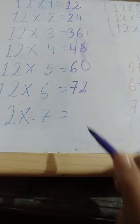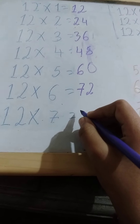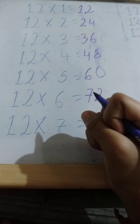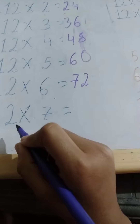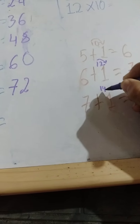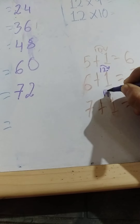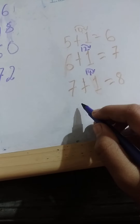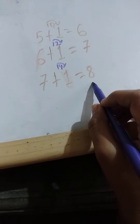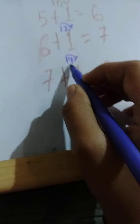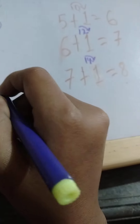For 7: 7 ones are 7. We put the 7 in our hand. Then 7 twos are 14. The 1 from 14 will be added to 7, giving the answer 8. We write 8, and then the 4 is in our hand, so we write the 4.